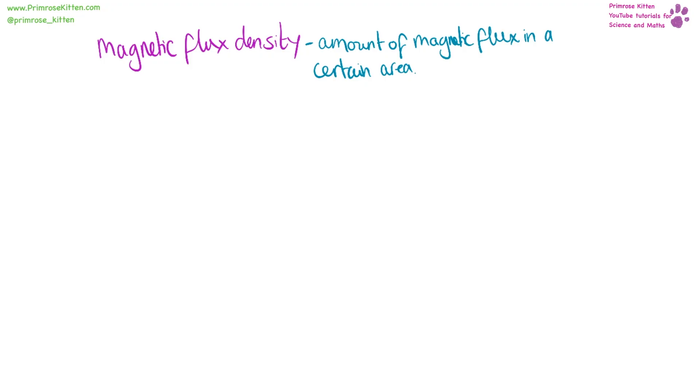Magnetic flux density is the amount of magnetic flux in a certain area. And the equation that we use for this is force equals magnetic flux density times current times length. You'll notice, really annoyingly, that this is an uppercase I and a lowercase L. Our units for this, for force, are newtons. For magnetic flux density, they are tesla. For current, it is amps, and for length, that is meters.